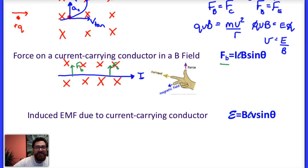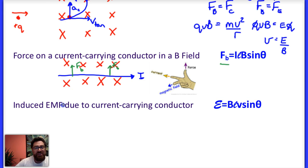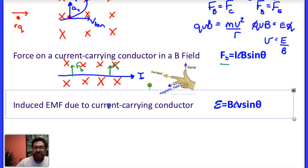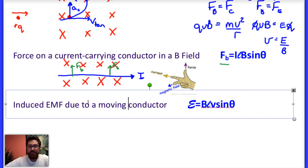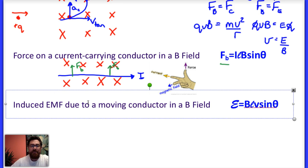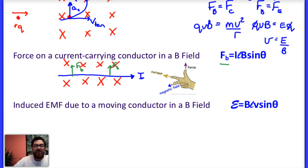The last idea is an induced EMF due to a moving conductor in a magnetic field. If there is no current already in a conductor and it is moved through the magnetic field, a force acts on the charges in the wire, polarizing it — giving it a positive side and a negative side — and therefore inducing an EMF in that wire.